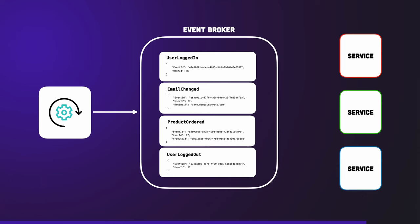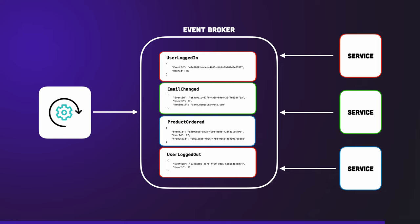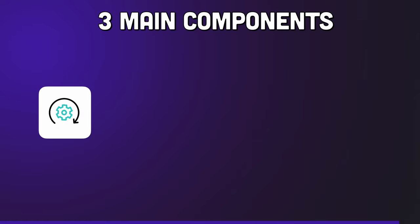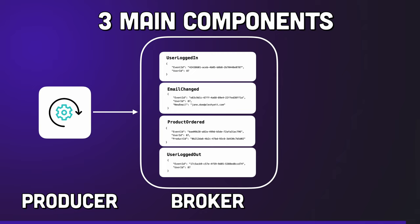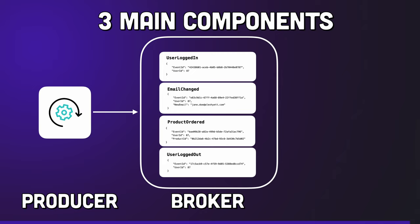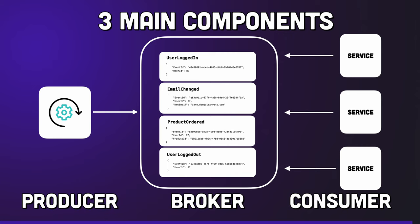When a service subscribes to the event broker, they specify which events they are interested in. It is then the broker's responsibility to work out which events the services have received and which ones still need to be read — this is usually done with a checkpoint. So in an event-driven architecture there are three main components: the producer which publishes the events, the broker which manages which subscribers get which events, and finally the consumer which subscribes to the event broker to receive the events.